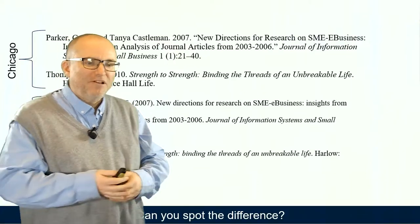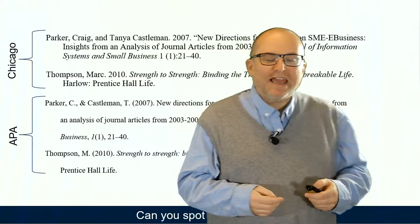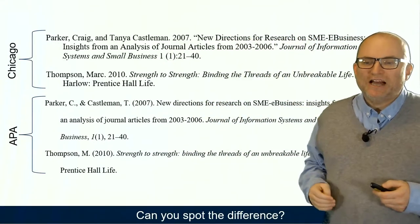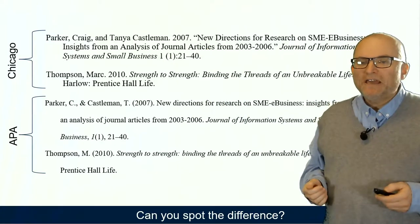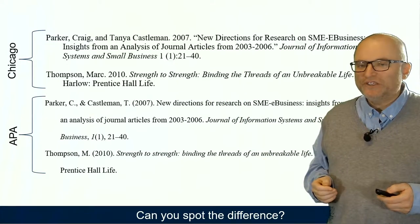So, for example, here are two references using formatting in two different styles. One of them is APA, the other is Chicago, two popular styles. And can you spot all the differences between them?